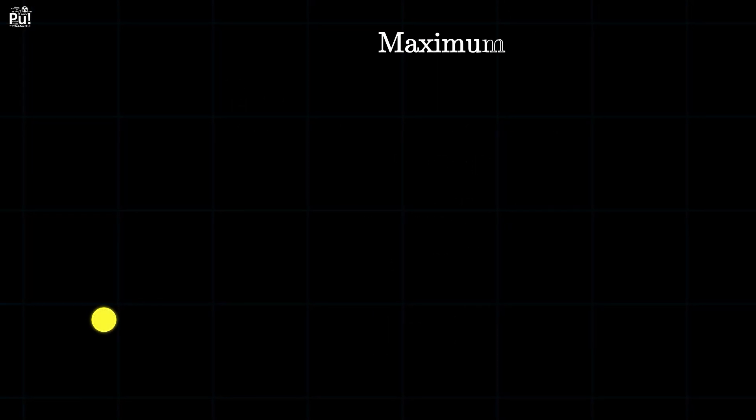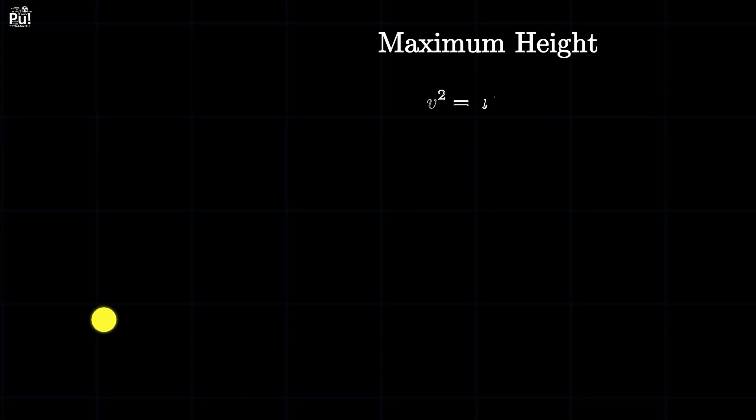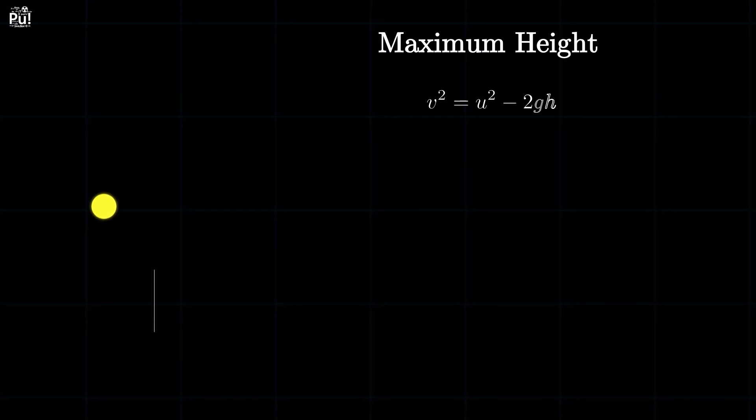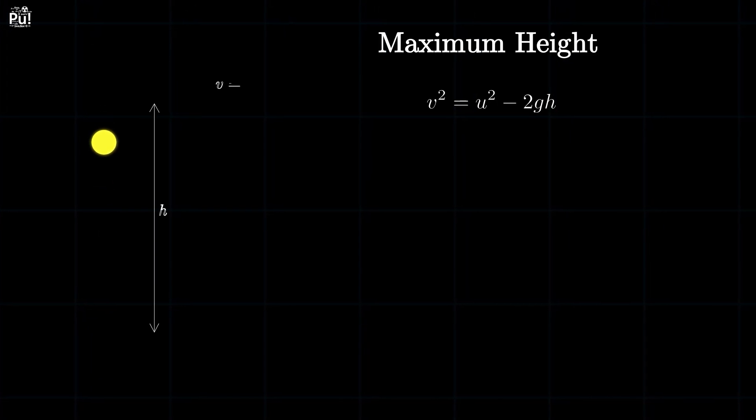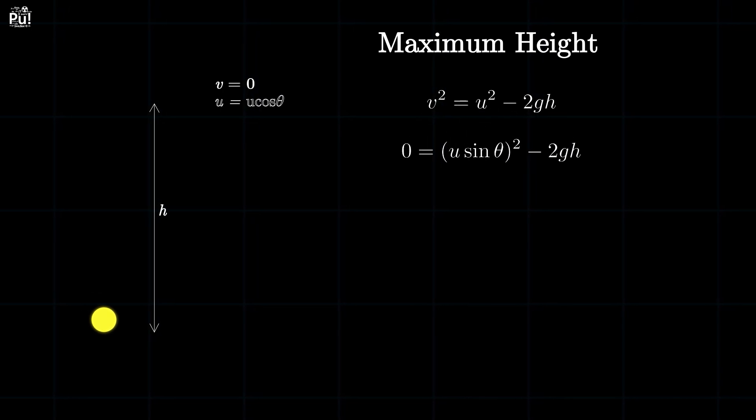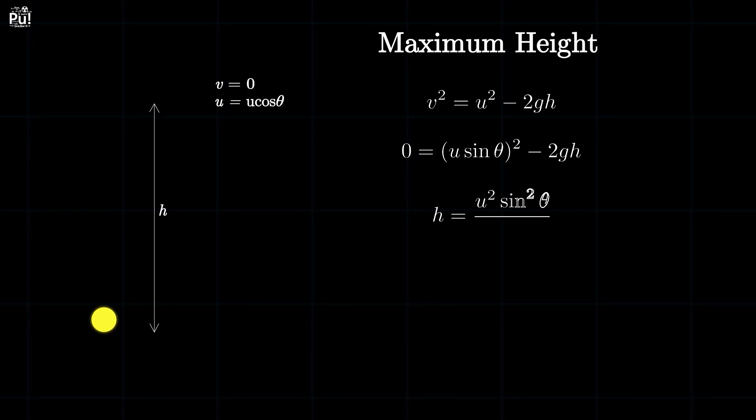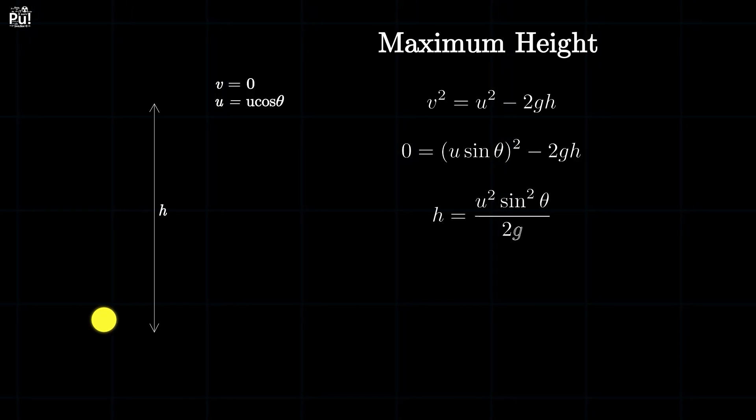Now let's find the maximum height it reaches. We use another kinematic equation. Final speed squared equals initial speed squared minus 2gh. At the top, final speed is zero, so zero equals u sine theta squared minus 2gh. Solving for height gives maximum height equals u squared times sine squared theta divided by 2g.